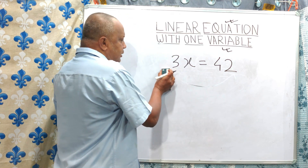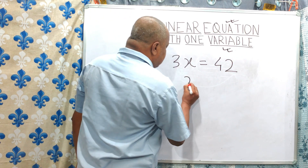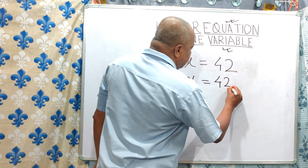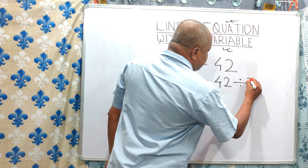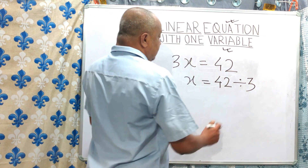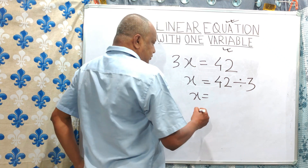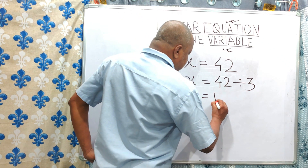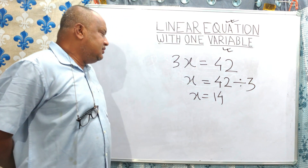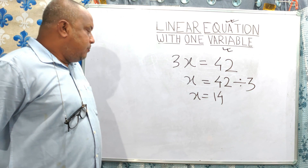So X is equal to 42 divided by 3. As it was multiplied, so it is divided. Therefore X is equal to 14. So your answer is 14.